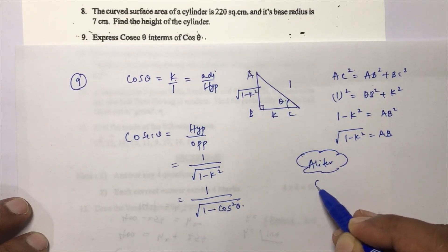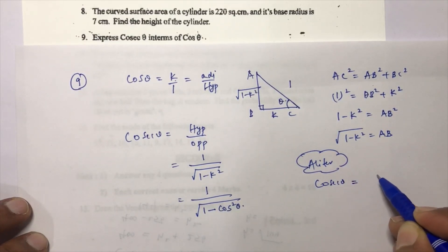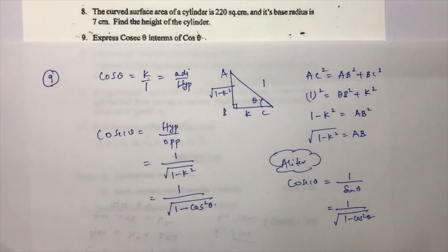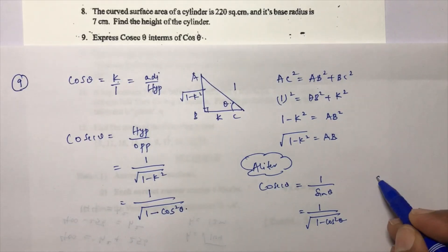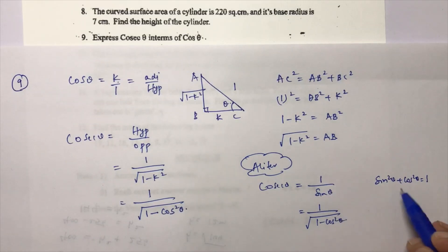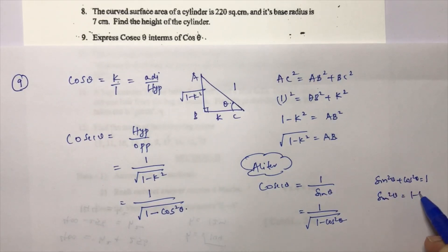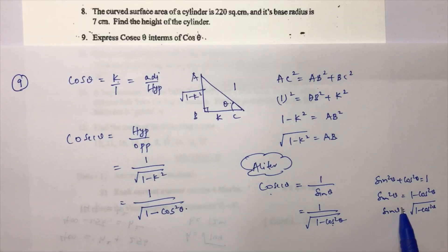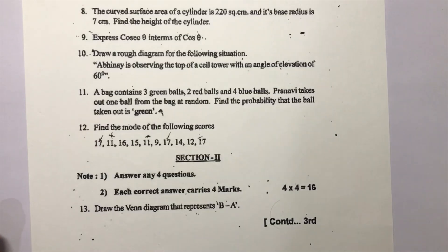Alternate method using identity: cosec θ = 1/sin θ. From the identity sin²θ + cos²θ = 1, we get sin θ = √(1 − cos²θ). Therefore cosec θ = 1/√(1 − cos²θ). Both the Pythagoras approach and the identity approach give the same result.